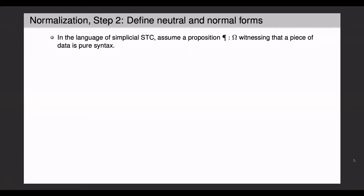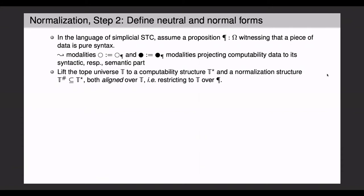The next step is to define neutral and normal forms. So now we're placing ourselves in this computability topos in its internal language, where we assume a proposition, phi_Cro, witnessing that a piece of computability data is in fact pure syntax. This gives rise to an open and a closed modality, which are operations on types, or more precisely on computability objects.